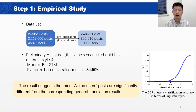We used back-translation to construct a parallel training dataset. In addition, we built a classification model to test whether general translation results and Weibo posts differed in linguistic style. The results suggest that most general translation results and the corresponding Weibo posts can be classified correctly.